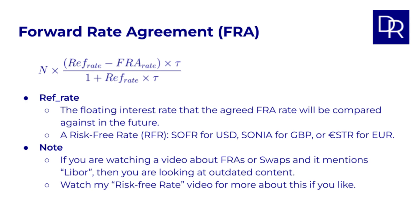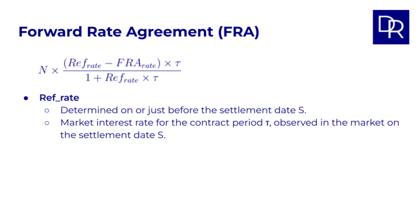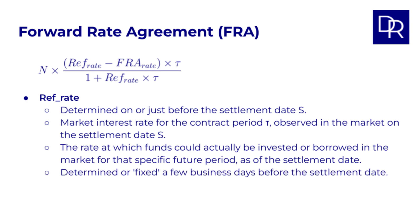If you are watching a video about FRAs or swaps and it mentions LIBOR, then you are looking at outdated content. The LIBOR rate was always used in the past but has now been completely replaced. You can watch my risk free rate video for more about this. Now, we see that the REF rate appears in both the numerator and the denominator of our settlement formula. This REF rate is a specific rate determined on or just before the settlement date — it is the market interest rate for the contract period tau observed in the market on the settlement date. In practice, the exact moment this REF rate is officially fixed for the purpose of the FRA settlement might occur a few business days before the actual settlement date, according to market conventions for that specific REF rate.